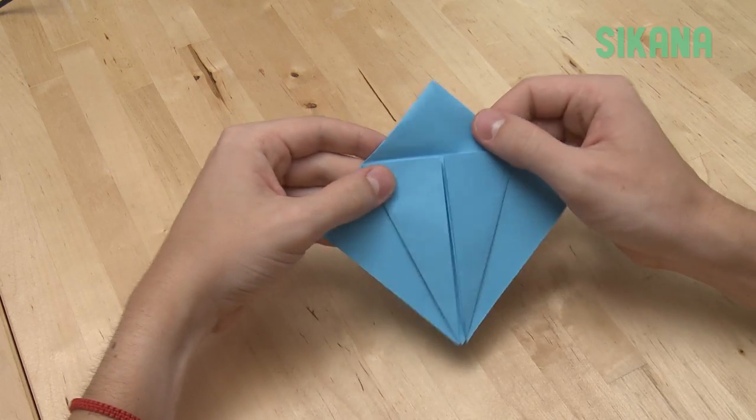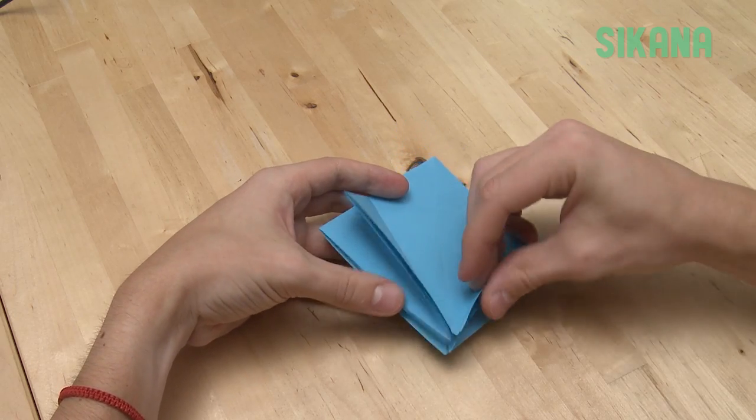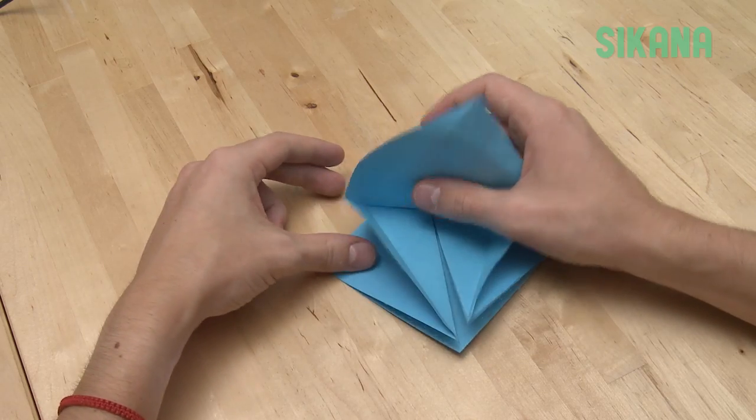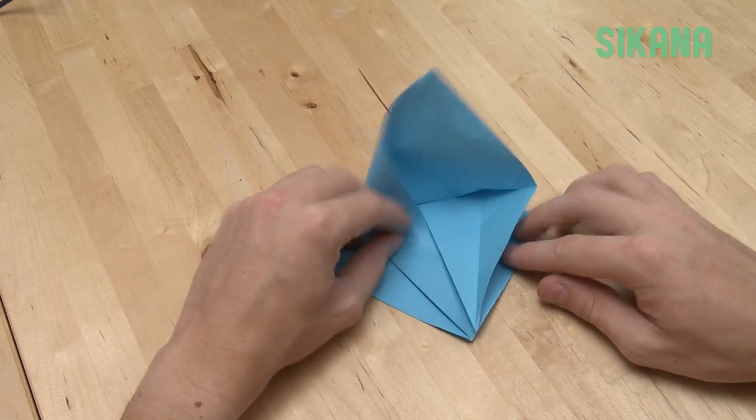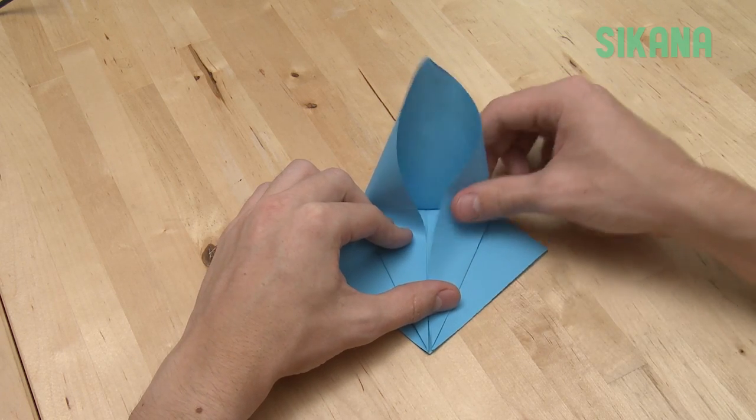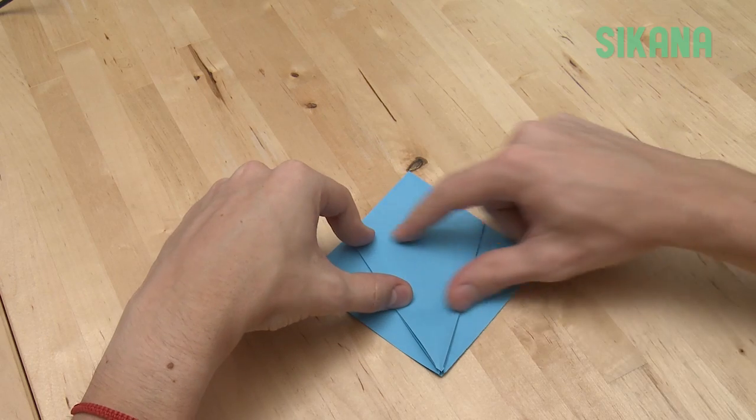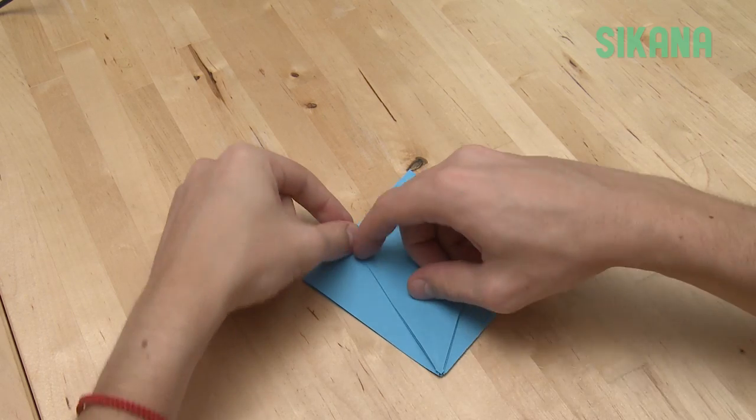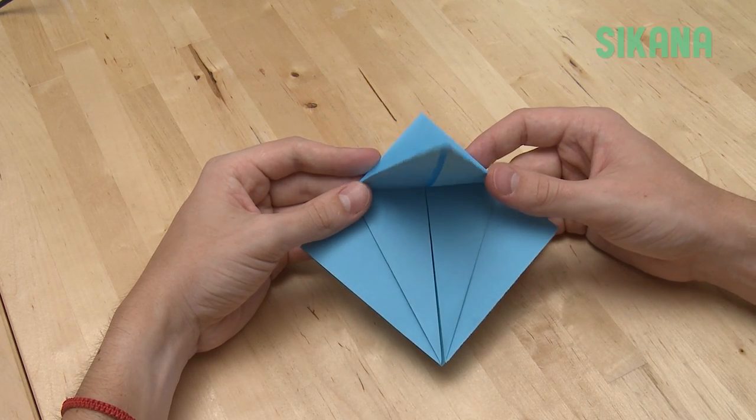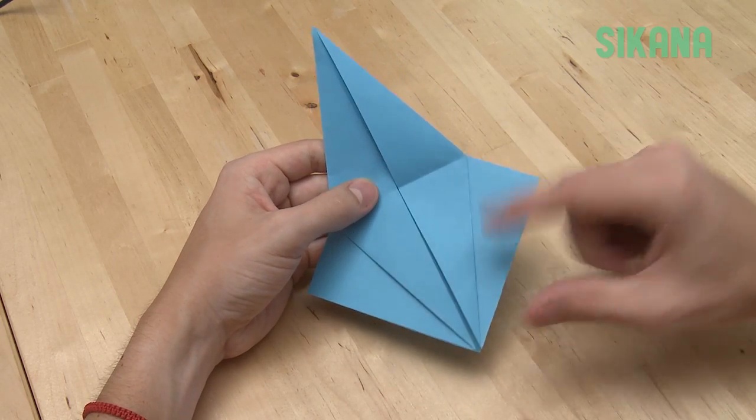Unfold like this. Open and fold inward using the creases you just made. Then unfold this part. Lift up this part and fold using these two ends.